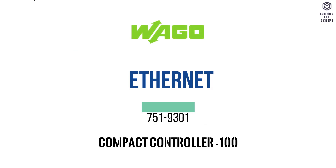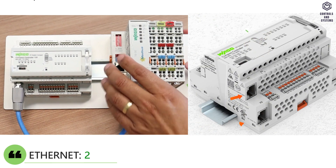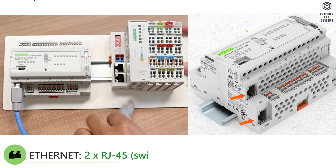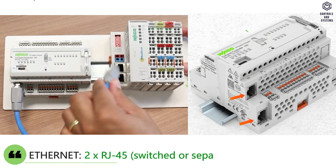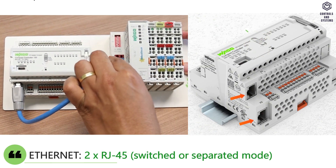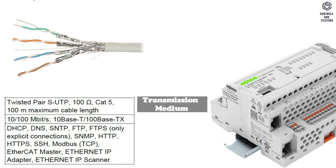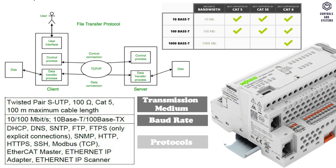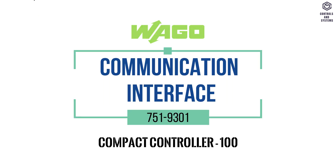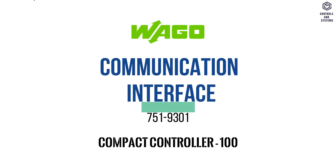Ethernet: There are 2 RJ45 ports. Switched or separated mode is available. Transmission medium, baud rate, and protocol specifications are shown in the table.